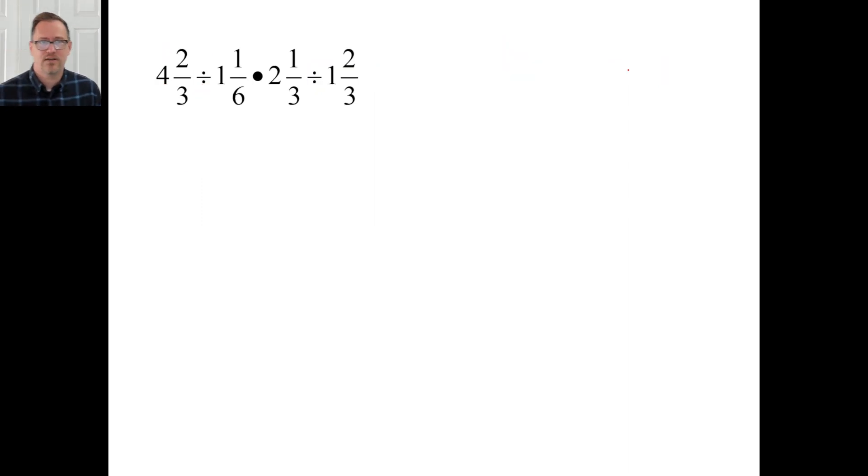All right. Go ahead and pause it and try the very last one. Okey-doke. Let's do it again. 4 2/3, what is that, 14/3, divided by 1 1/6, that's 7/6. I'm just going to go ahead and just skip a step here. If you divide by 7/6, that means you multiply by 6/7. If you're going to multiply by 2 1/3, that's 7/3. And if you divide by 1 2/3, that's going to be 5/3. But if you divide by that, that means you'd multiply by 3/5, right?